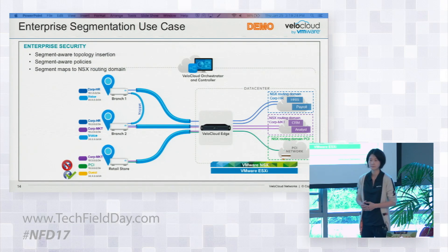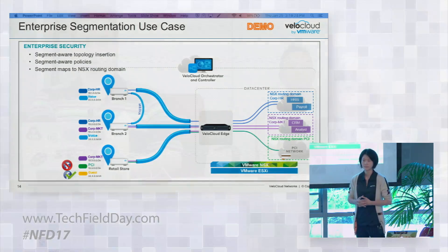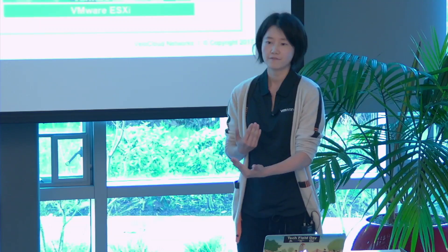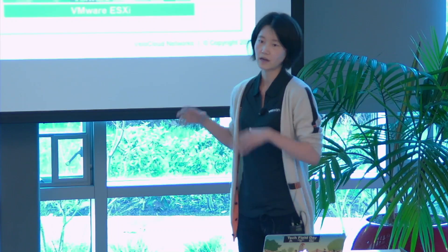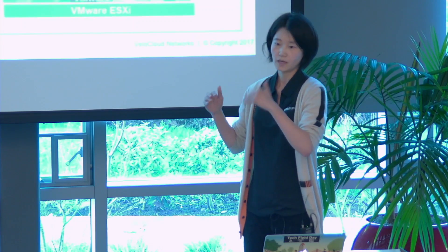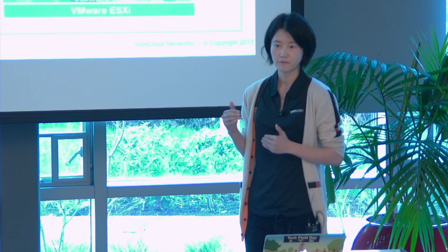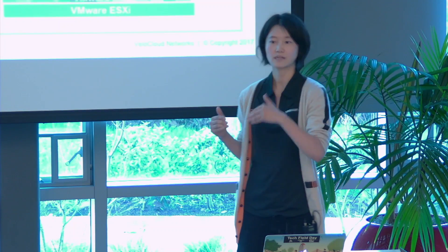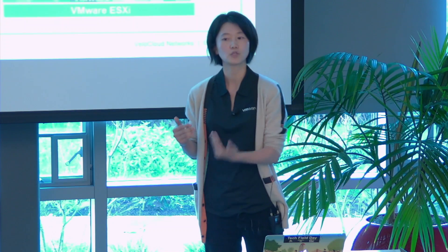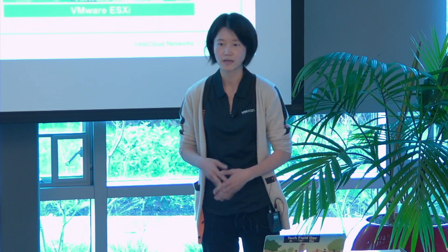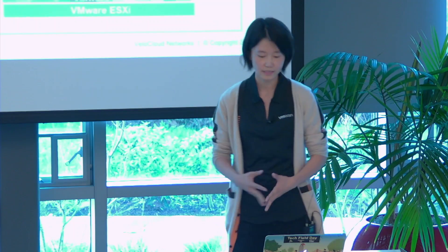On the branch side, you map those segments to VLAN IDs. On the LAN side, it's like VRF Lite — you configure different interfaces and just assign a segment to the interface, then it will be isolated.